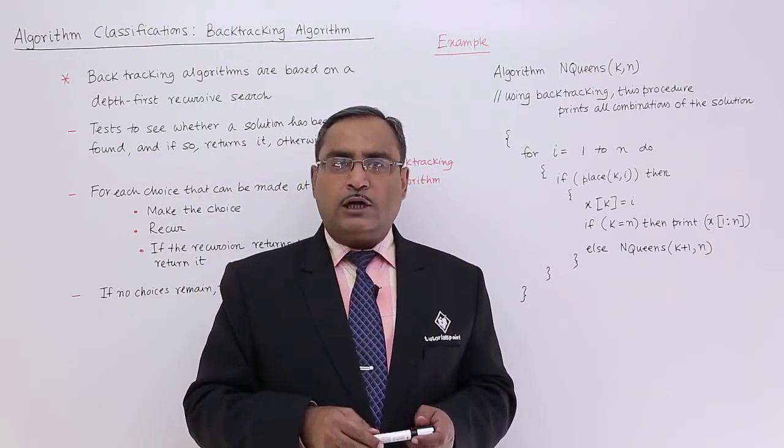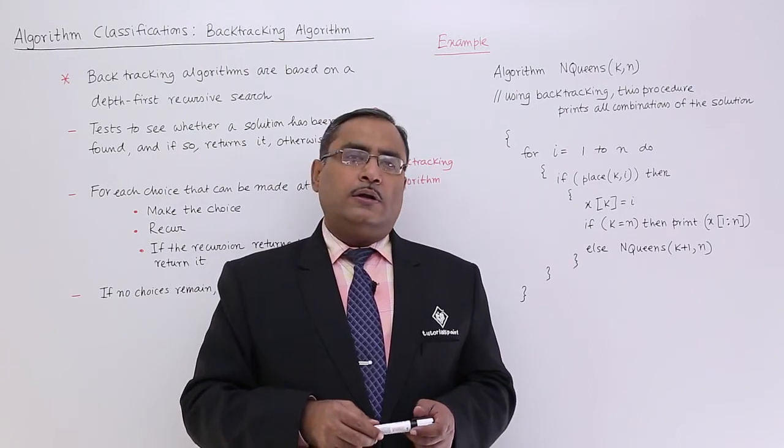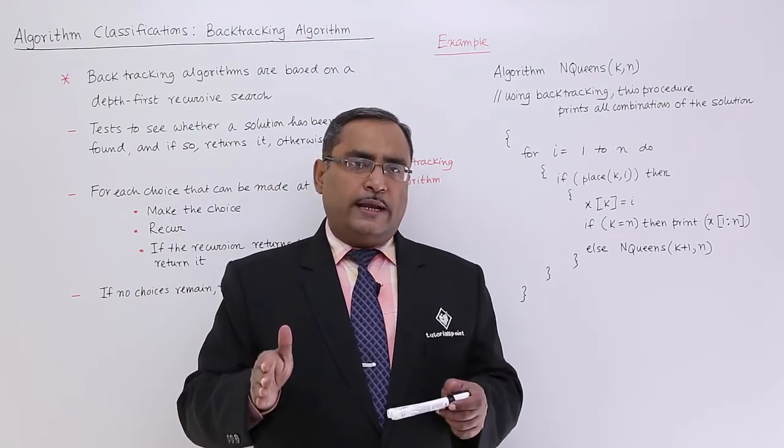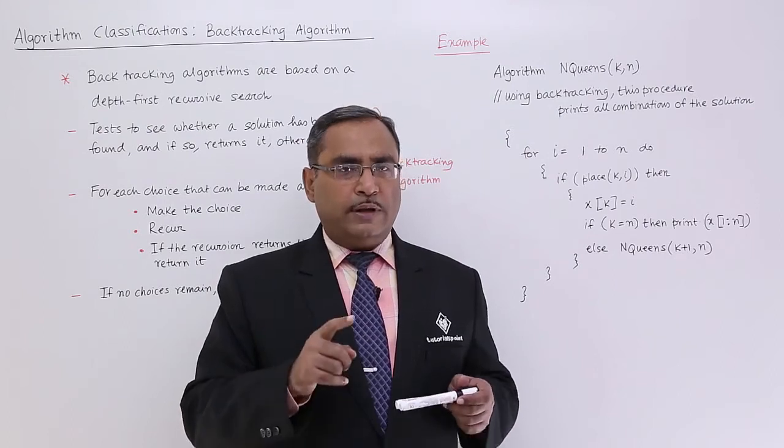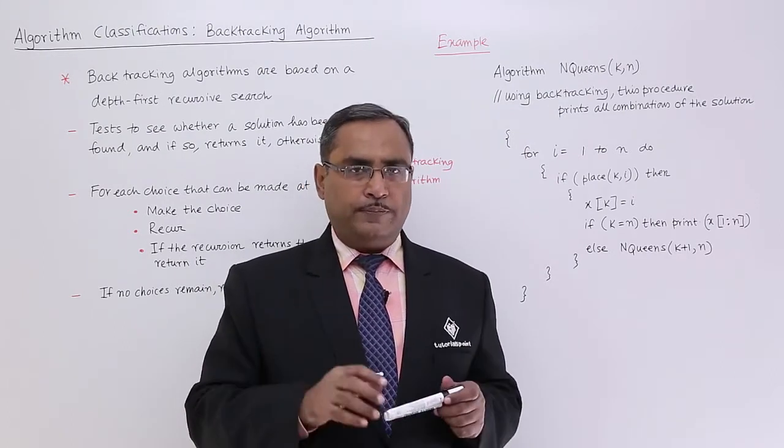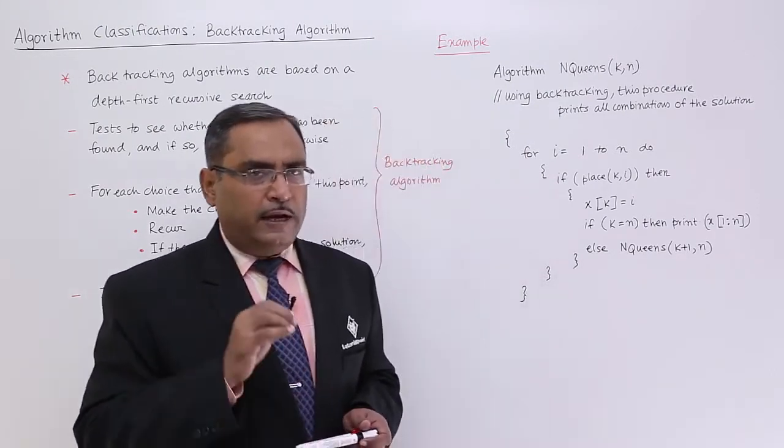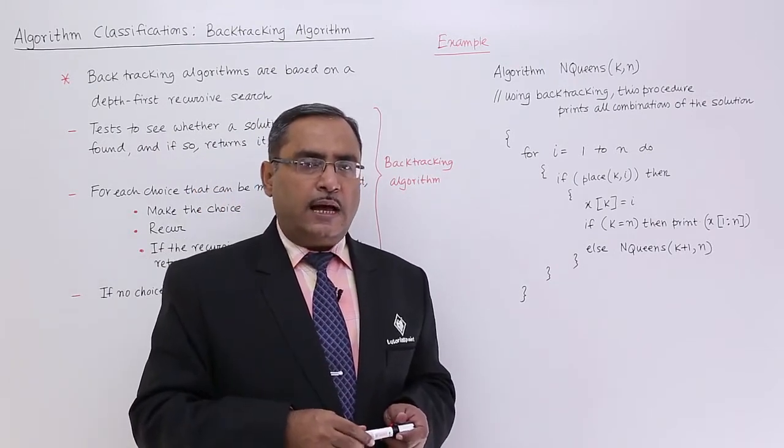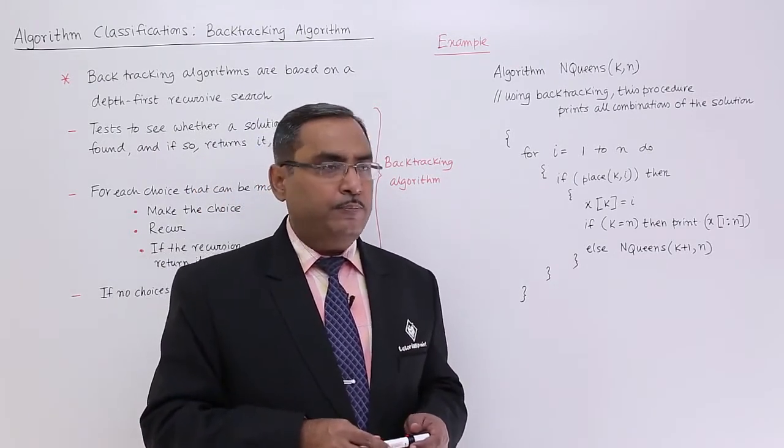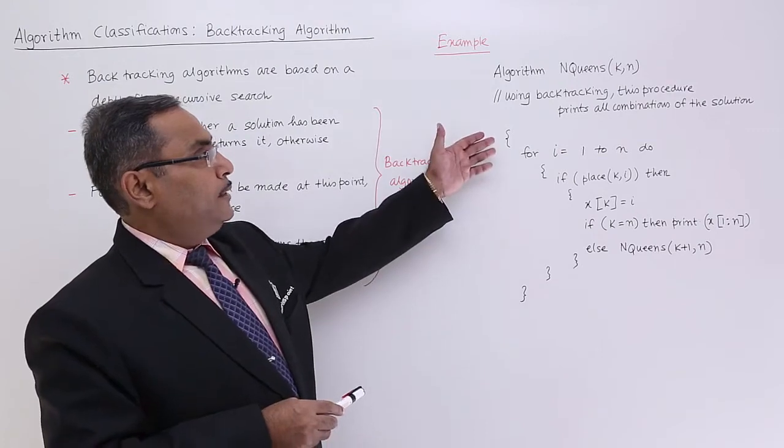N-Queens are to be placed on an N cross N matrix so that no two Queens will have the same diagonal, same row, and same column. In that, this very problem is known as a good example of backtracking problem, backtracking algorithm. Now, this is my N-Queens problem.